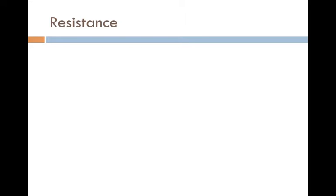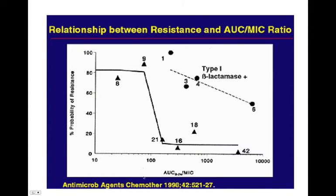There is some research on how to best avoid resistance patterns. This slide shows the probability of resistance. A 100% probability of resistance occurs if you're in this range. This is for a fluoroquinolone, and it shows that if you keep the area under the curve for 24 hours over the MIC above 100 — that seems to be the magical number — your probability of resistance drops dramatically from about 80% down to 10% or less.